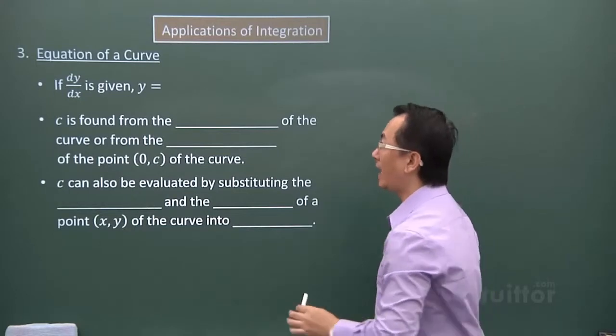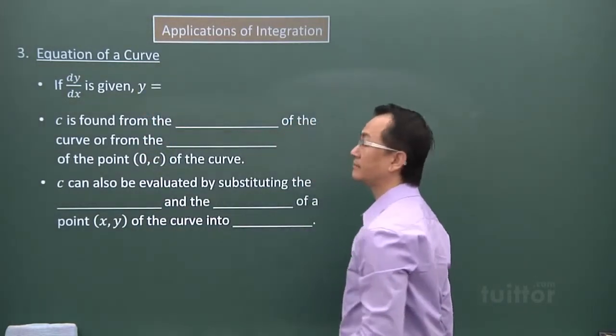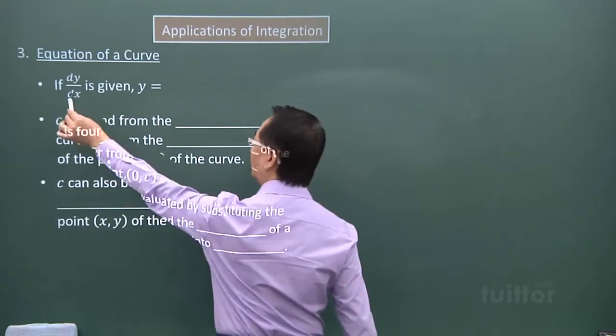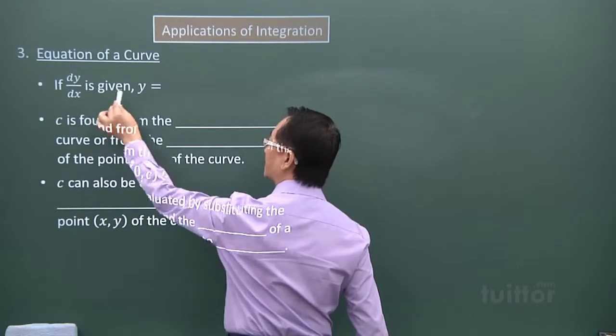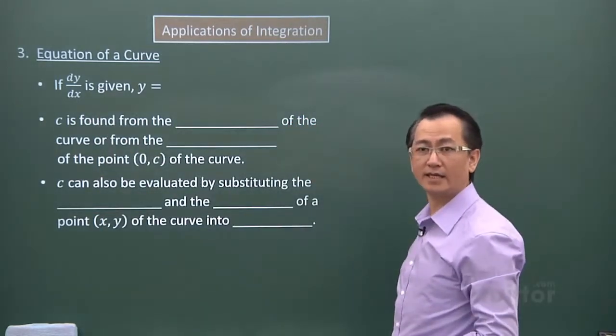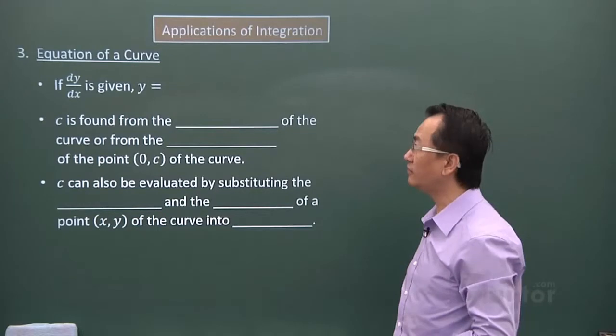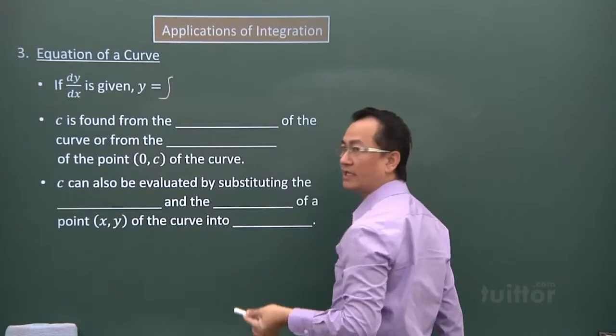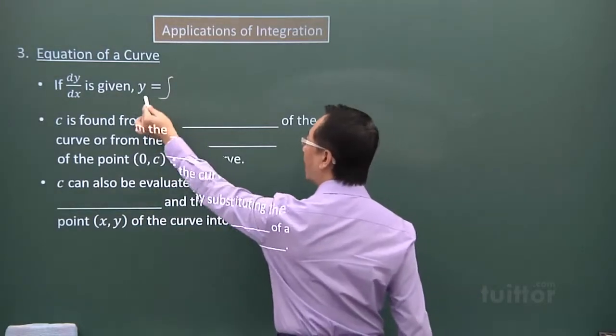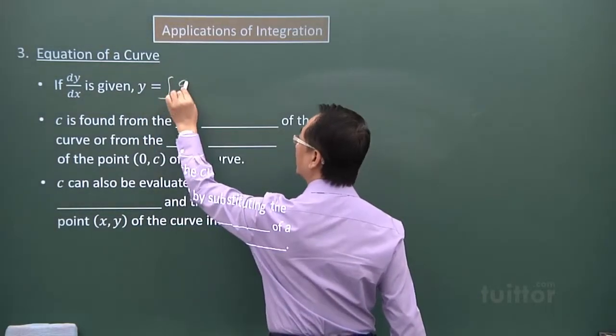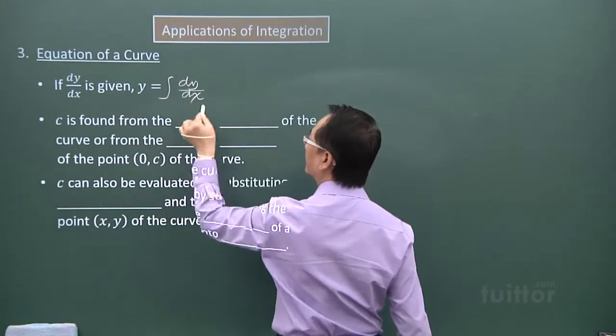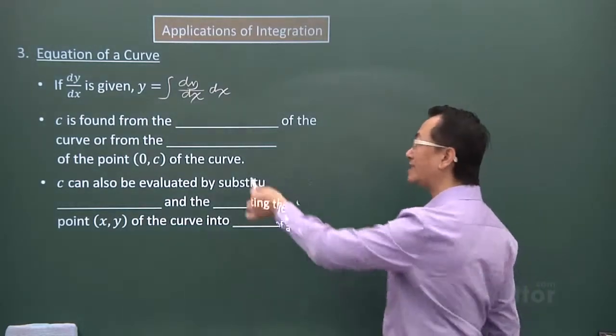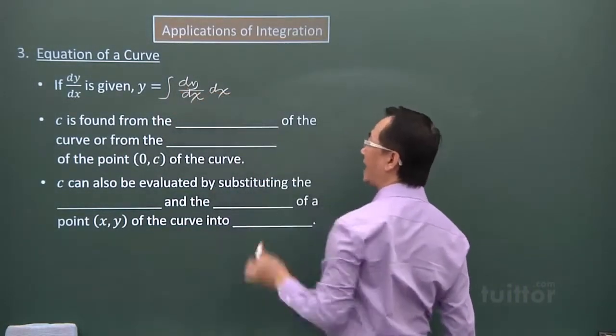We are now looking at equation of a curve proper. You have seen the result we had before. Therefore, if dy over dx is given, to find the equation of the curve, I would then have to involve indefinite integration. So y equals integration of the first derivative with respect to x. This is the result we had in the last slide.